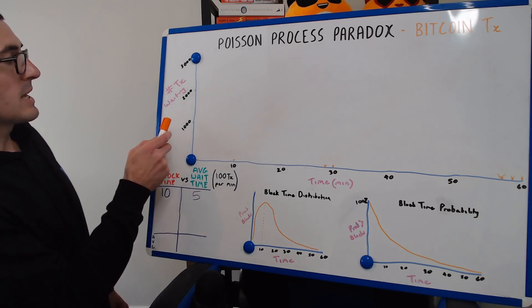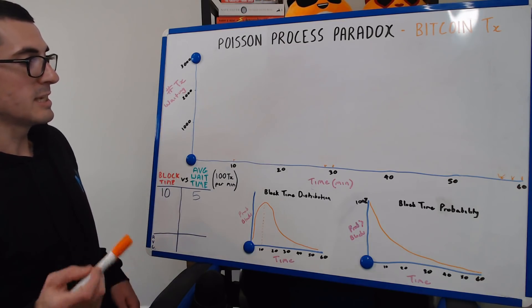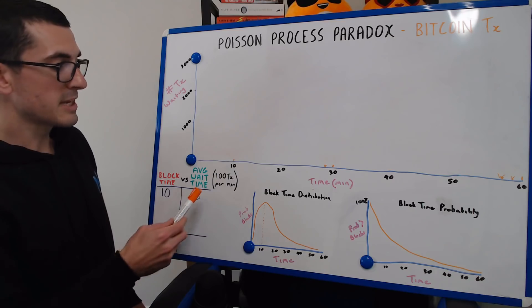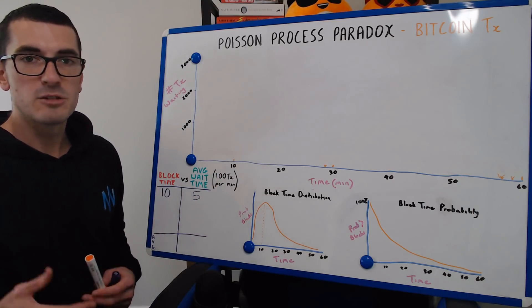So the first graph we have, the number of transactions that are waiting to be included in the next block. And we're going to assume that around 100 transactions per minute are broadcast into the Bitcoin network, and those miners are competing to solve that equation to win that next block and include all those transactions and add it to the blockchain.